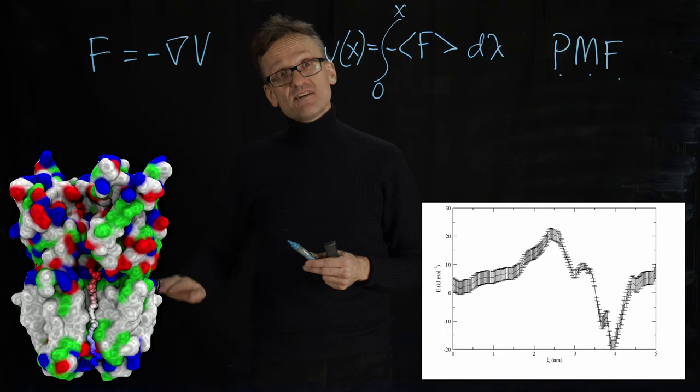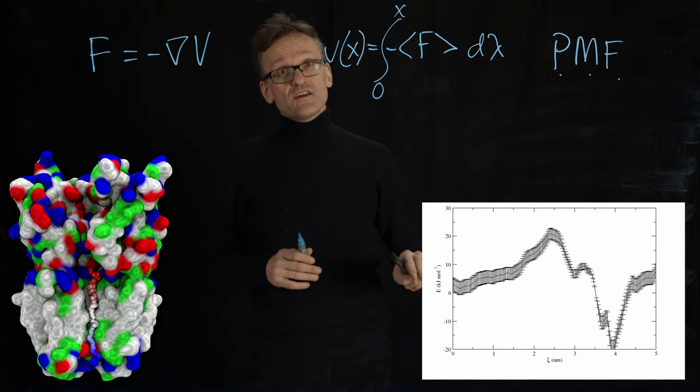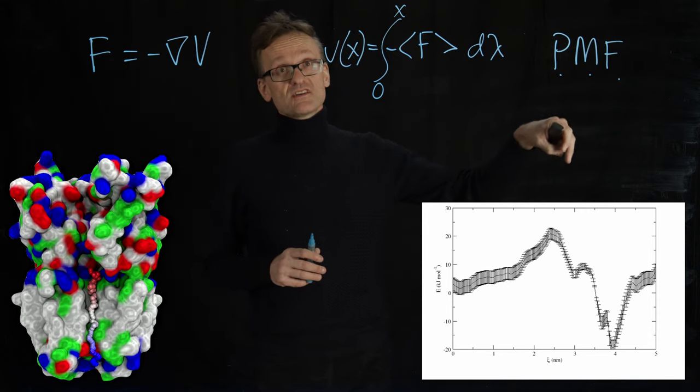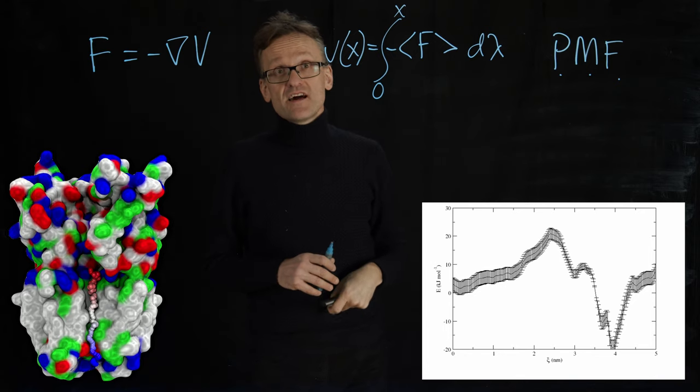In this case, the reaction coordinate is just the Z value inside the channel. And you see here how the free energy varies. And here we have the barrier that the ions will have to go through.